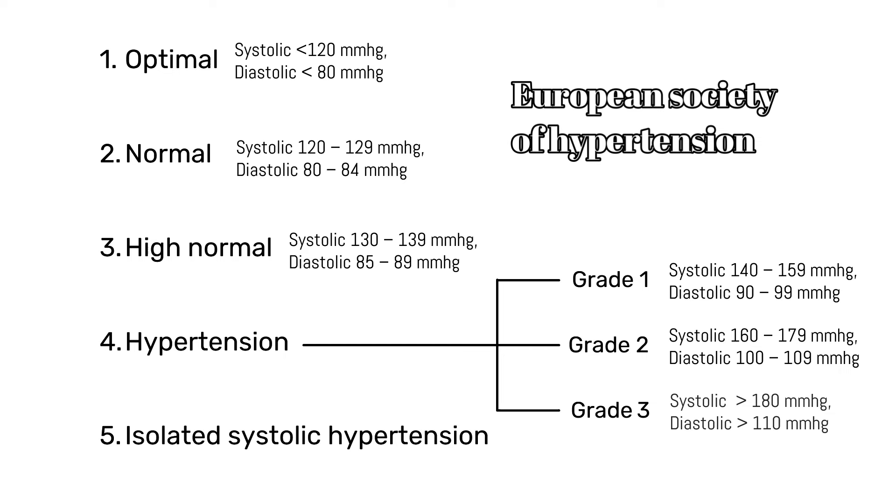Another type is isolated systolic hypertension, which occurs when the diastolic blood pressure is below 80 millimeters of mercury but systolic blood pressure is above 140 millimeters of mercury. Isolated systolic hypertension can be further differentiated into three categories — grade 1, grade 2, and grade 3 — using the same thresholds as the hypertension categories, except that the diastolic blood pressure always remains below 80 millimeters of mercury.